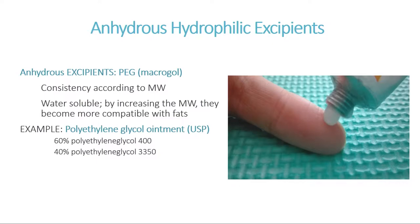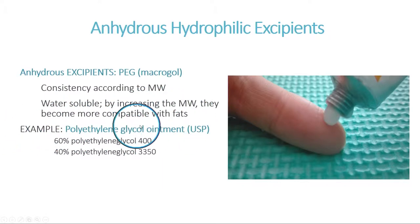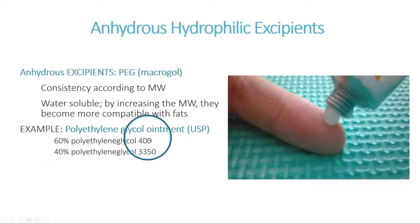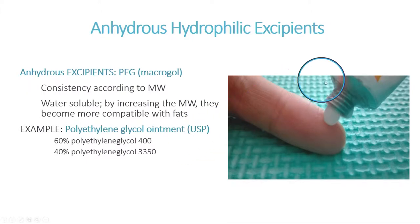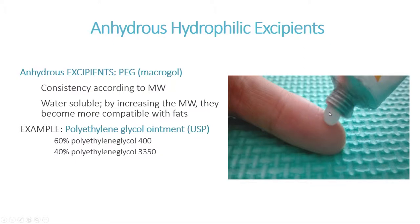In the slide we can see an example from the American Pharmacopoeia, which is the polyethylene glycol ointment, prepared with 60% of polyethylene glycol 400 and 40% of polyethylene glycol 3350. They are mixed together to produce the adequate consistency that we can see in this slide.